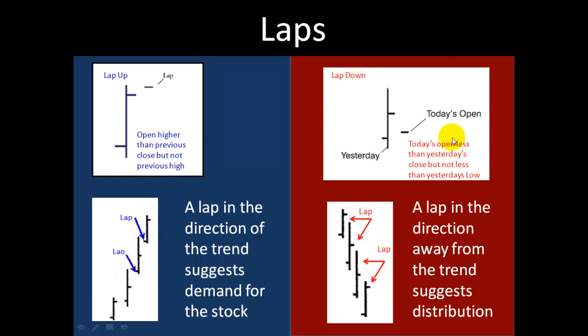Here we have a lap down. Conversely, today's open is less than yesterday's close but not less than yesterday's low. So here's the low, here's the close, and it falls somewhere in between. Here's what laps down might look like on a chart — here are several consecutive laps down. A lap down in the direction away from the trend suggests distribution.